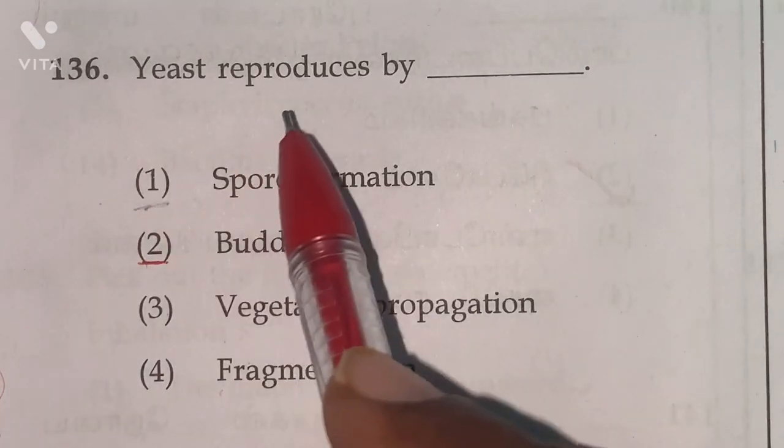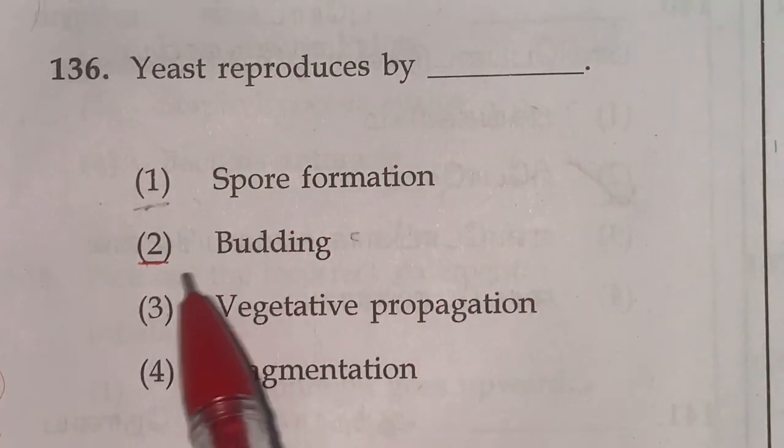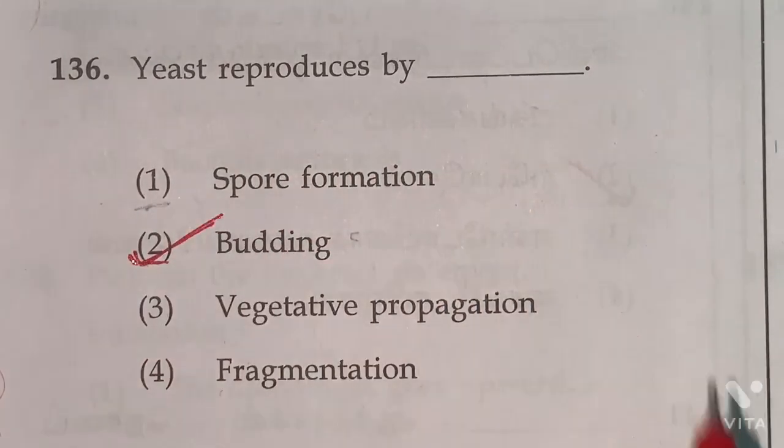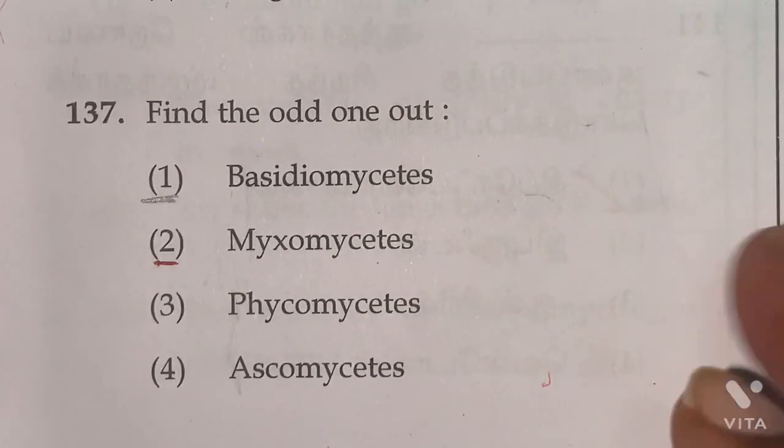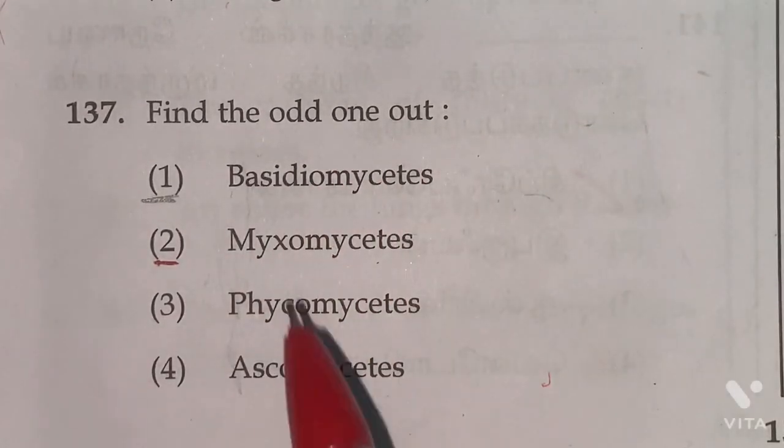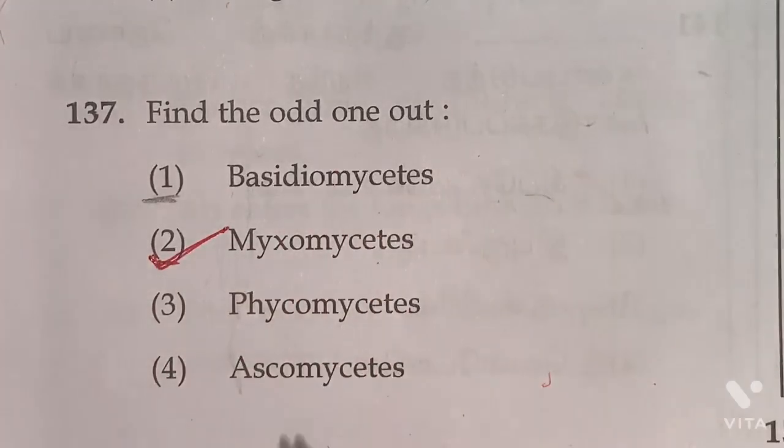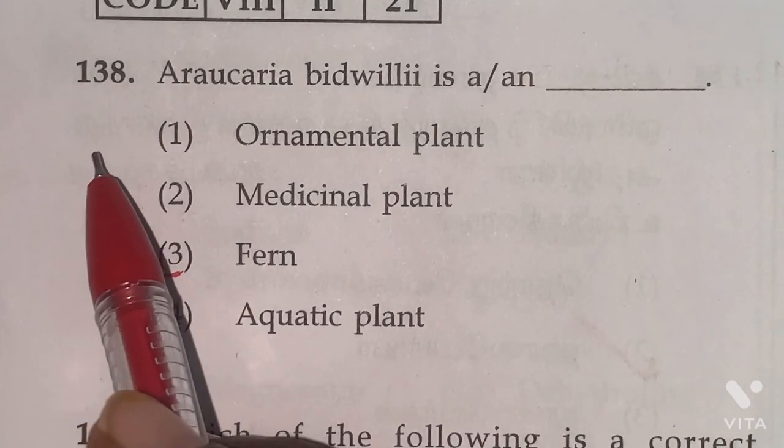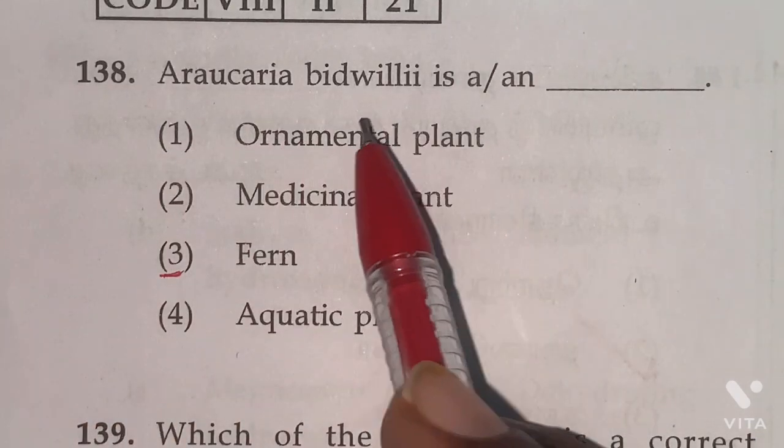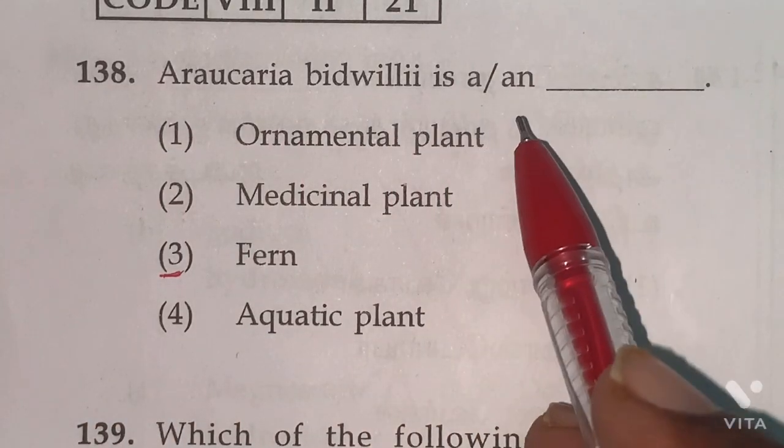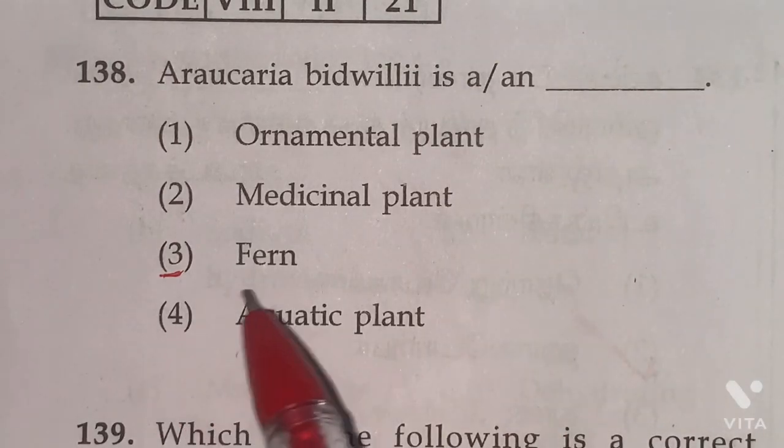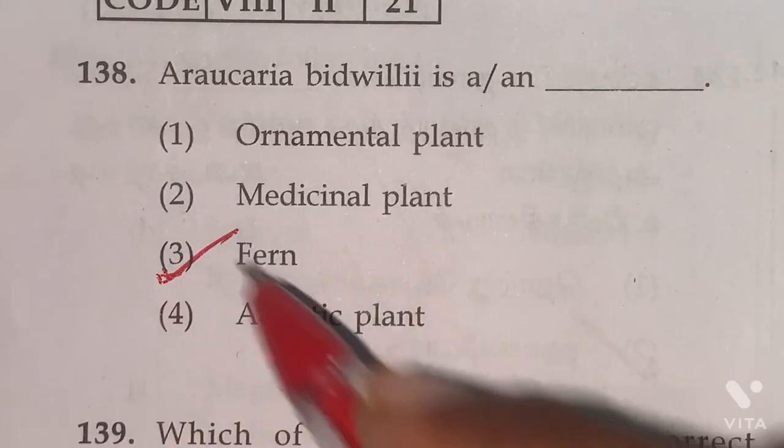Question number 136. Yeast reproduces by budding. Option 2 is the right answer. Question number 137. Find the odd one out. Myxomycetes, this belongs to mold. Others belong to fungi. Question number 138. Araucaria excelsa is a fern. Option 3rd one is the right answer.